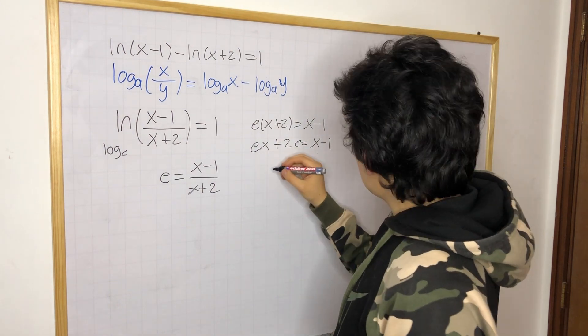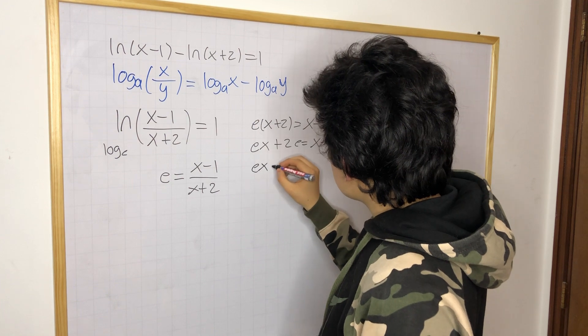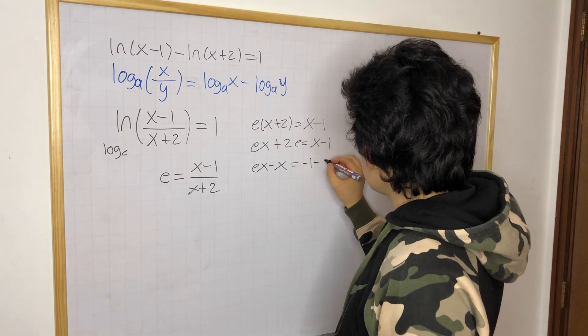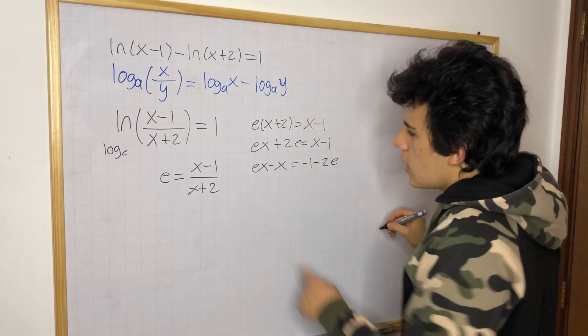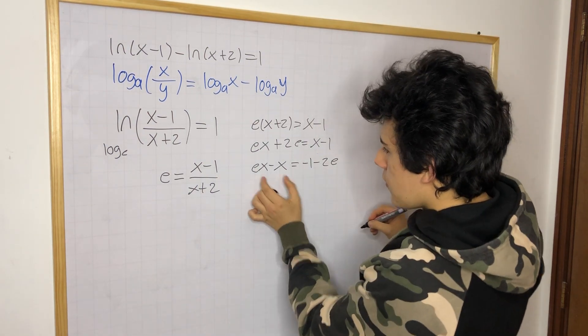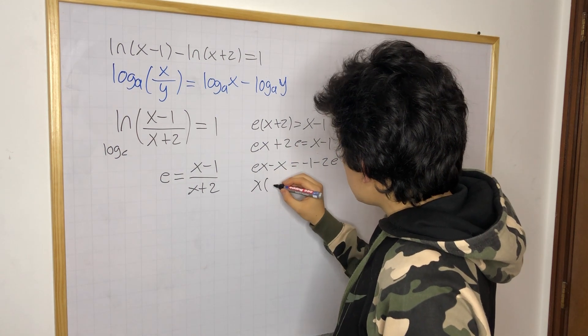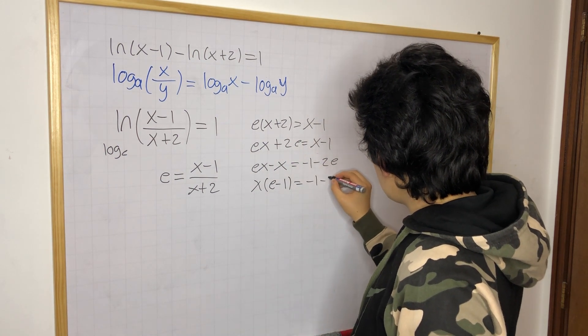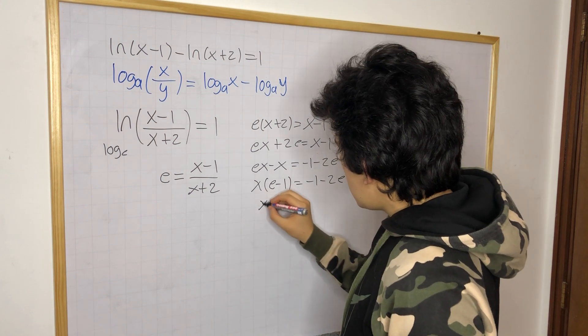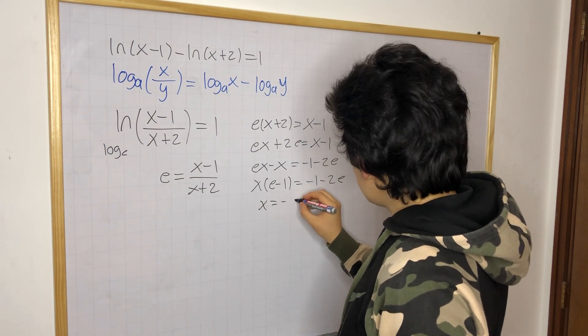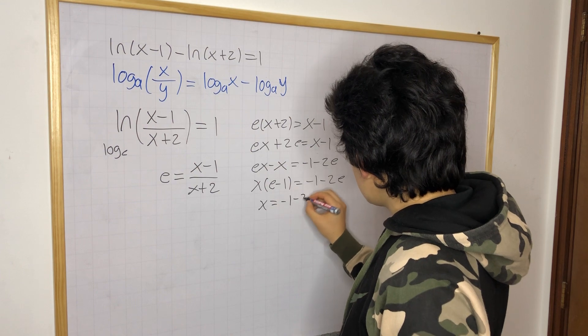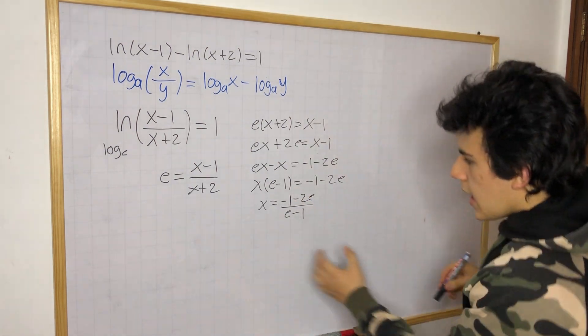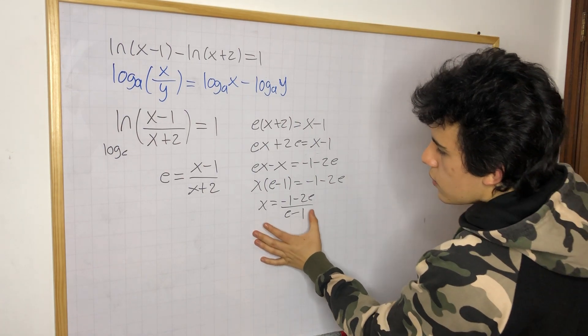We can do e times x minus x is equal to negative 1 minus 2e, and we can take out an x from here. So we have x times e minus 1 is equal to minus 1 minus 2e, so you get x is equal to minus 1 minus 2e over e minus 1. And this is the value you are looking for for x.